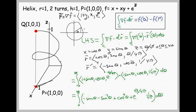Writing this as a position vector, we have r equals (cosine theta, sine theta, theta over 4 pi). We need the velocity vector, so we take the derivative of r: that's (minus sine theta, cosine theta, 1 over 4 pi). Writing the integral out, we have the gradient vector — (1 plus sine theta, cosine theta, e to the theta over 4 pi) — dotted with the velocity vector (minus sine theta, cosine theta, 1 over 4 pi), integrated from 0 to 4 pi.